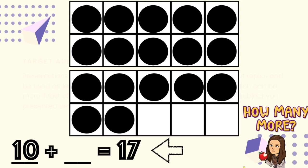Now I need to count the counters that I added to figure out how many more it took. I added one, two, three, four, five, six, seven counters. 10 plus 7 equals 17.